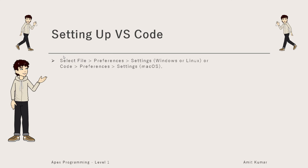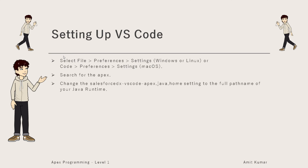To do that, go to the File menu, then Preferences, then Settings on Windows or Linux. On macOS, go to Code > Preferences > Settings. Search for Apex and change the salesforcedx-vscode-apex.java.home setting to the full path of your Java runtime.